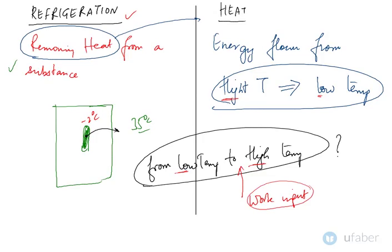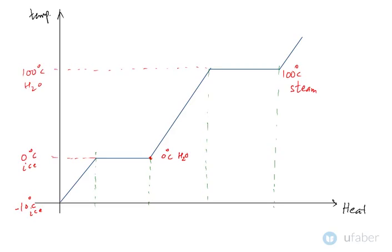Now before we move ahead, let us look at the next slide. What you can see here is a plot between temperature and heat. You have a sample of ice at minus 10 degrees Celsius, and you start heating it. As you start giving heat, the temperature of the body increases. When you are at minus 10 degrees Celsius ice and you start giving heat, the temperature starts to rise, keeps increasing, and it reaches zero degrees Celsius. The phase is still ice — the temperature has increased from minus 10 degrees Celsius to zero degrees Celsius.